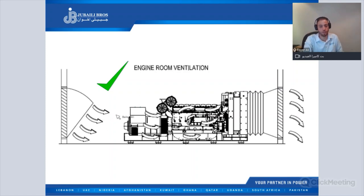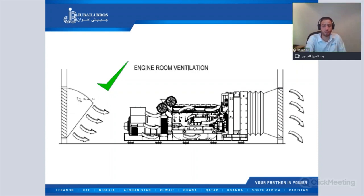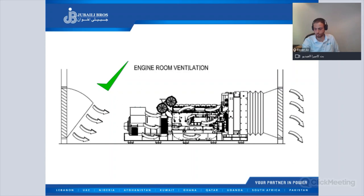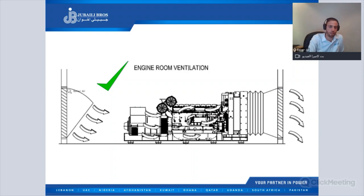The third system, which is also acceptable, has the air inlet position at the high wall. This system is acceptable if we fix a duct here to direct the airflow to the alternator and air filters. If we have the opening at a high level on the wall, we must fix a duct to direct the air to the alternator and air filters, and then the air will pass to the engine and out — so this system is also acceptable.